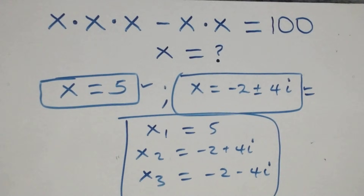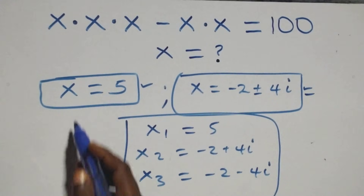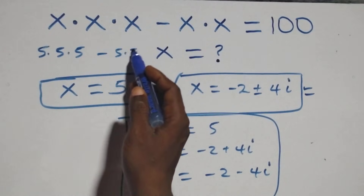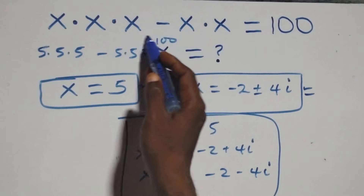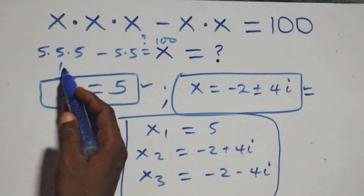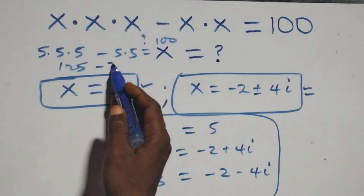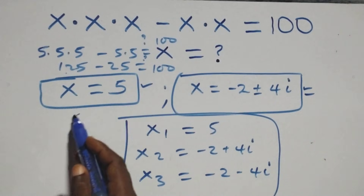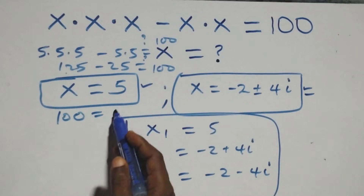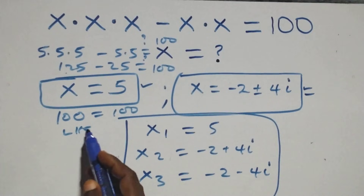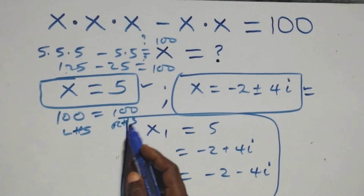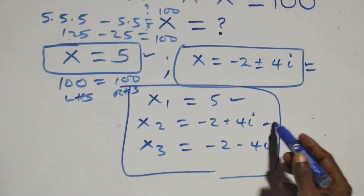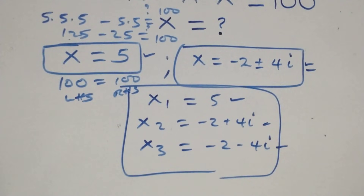When we substitute x equals to 5, the equation becomes 5 times 5 times 5 minus 5 times 5. That is 125 minus 25, which equals 100. Left-hand side equals right-hand side, so x equals to 5 satisfies the given equation. The two complex solutions satisfy it in the same way.